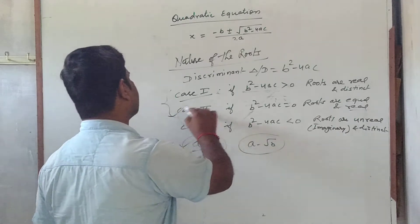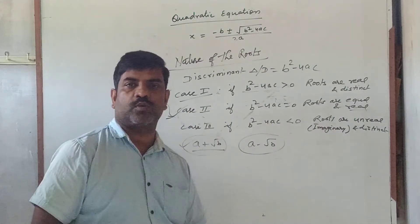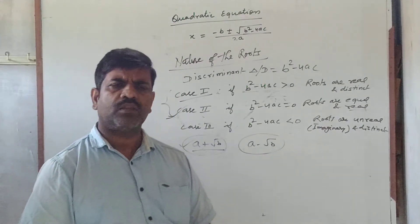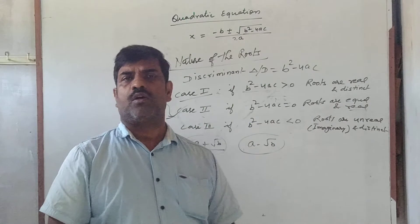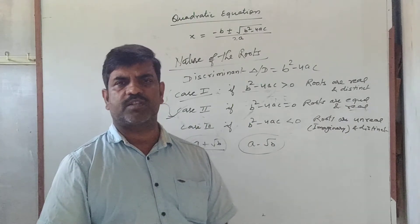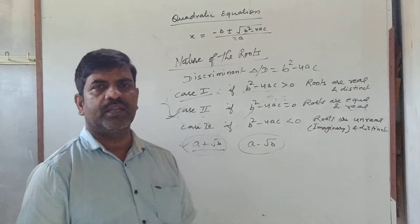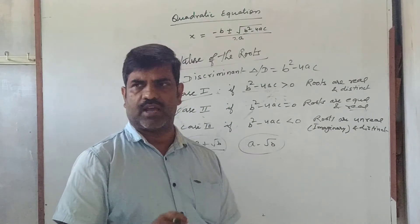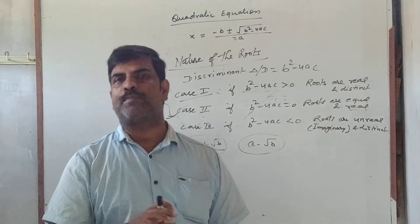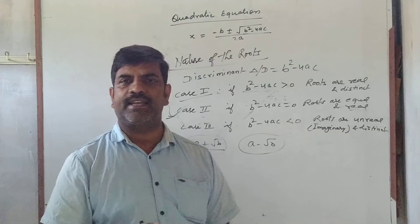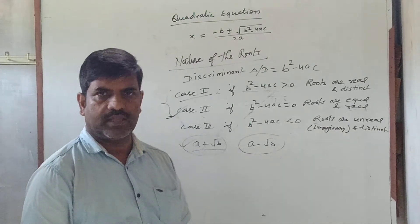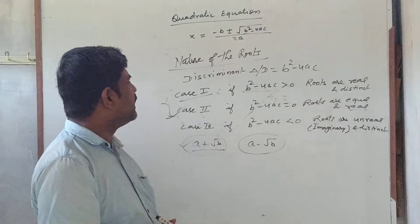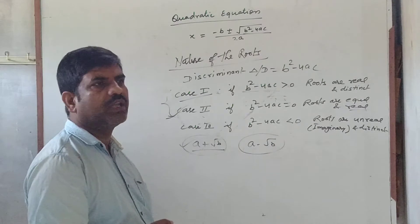The second case (discriminant = 0) is often used in problems where you are given that the roots are equal and asked to find the value of a particular constant. If the roots are equal, we apply b² - 4ac = 0, substitute the values of a, b, and c, and solve to find the value of that constant.